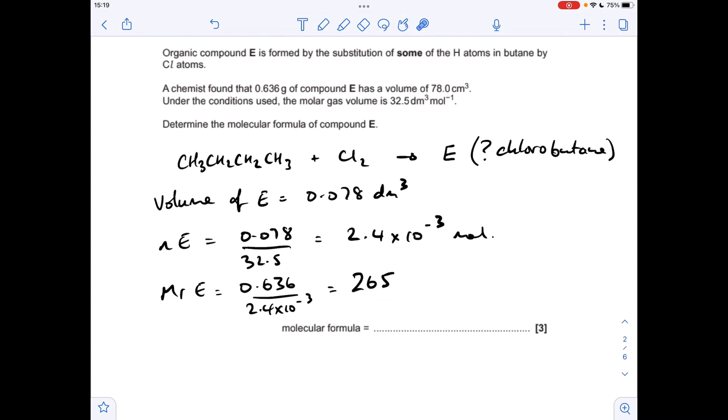Next thing we're going to do is take off the MR of 4 carbons which is 48, which leaves 217 for the chlorines and the hydrogens left on the molecule. Next thing I want to do is divide by the MR of chlorine which is 35.5, which is basically telling us that there are six chlorines in this halogenoalkane.